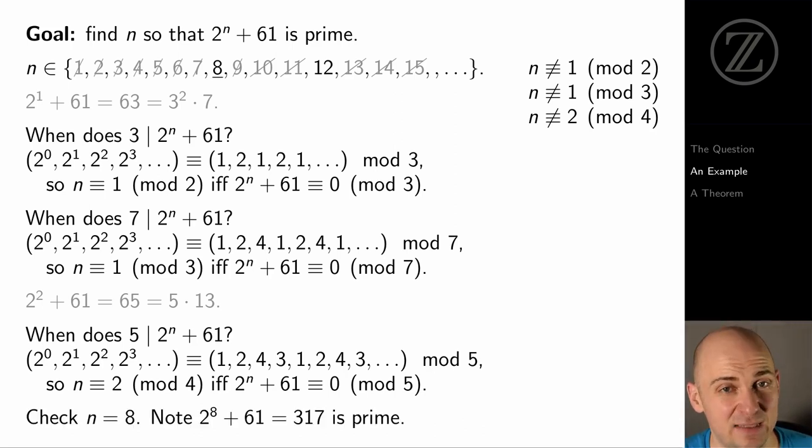We've eliminated a lot of possibilities, but one of the numbers that hasn't been eliminated is 8. And when we try n equals 8, when we compute 2 to the 8 plus 61, we get 317. And 317 is prime. So we found an n, 8, so that 2 to the n plus 61 is prime.